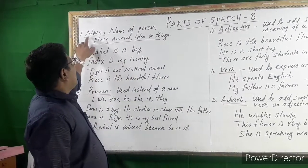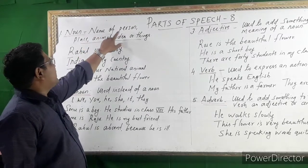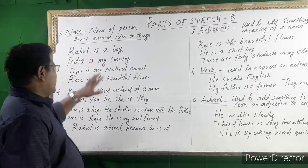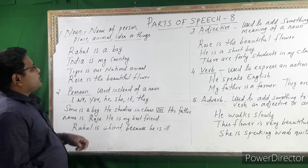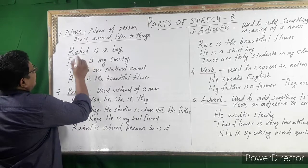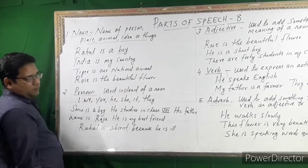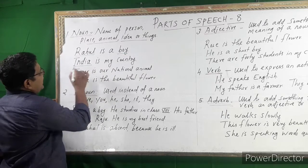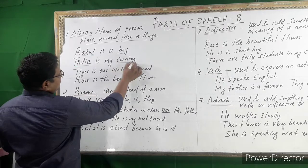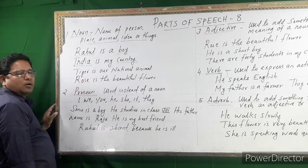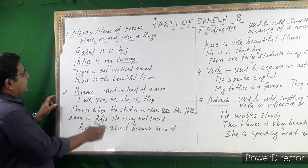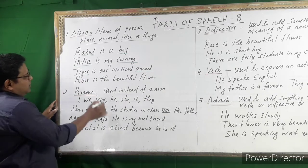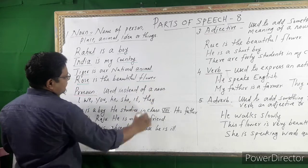What is a noun? Noun is the name of a person, place, animal, idea, or thing. For example: 'Rahul is a boy.' Rahul is a noun and boy is also a noun. Rahul is a proper noun and boy is a common noun. India is a noun — India is a proper noun and country is a common noun. Tiger is a noun, animal is also a noun. Rose is a noun and flower is also a noun.